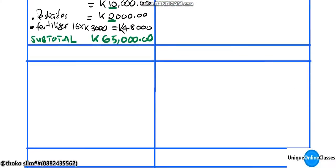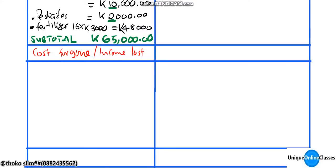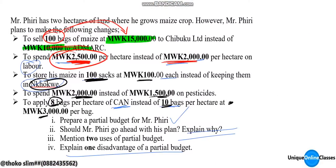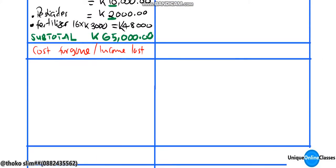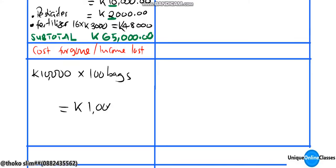The next thing we need to find is the cost foregone, or income lost. Income lost is from selling at the market — that's 100 bags times 10,000 kwacha per bag, which equals 1,000,000 kwacha.